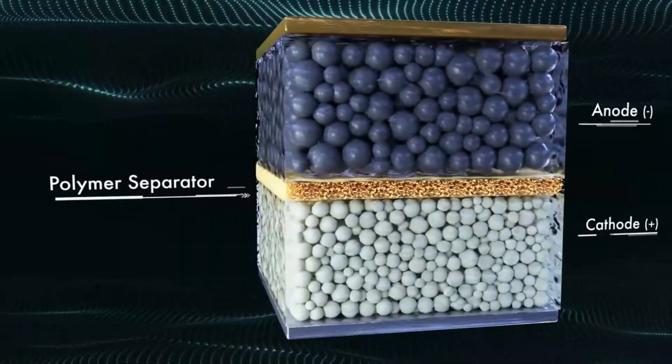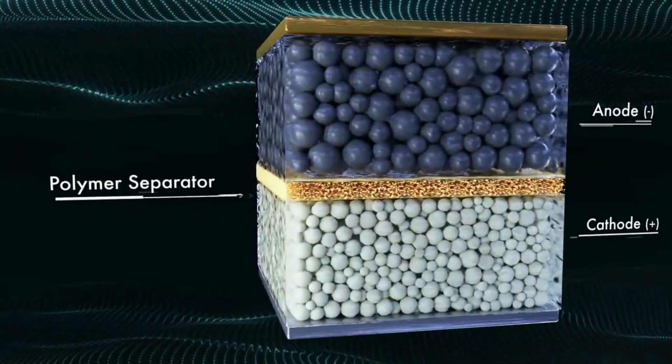A lithium-ion cell also includes a central separator, which is a thin layer of a plastic polymer, polyethylene or polypropylene.